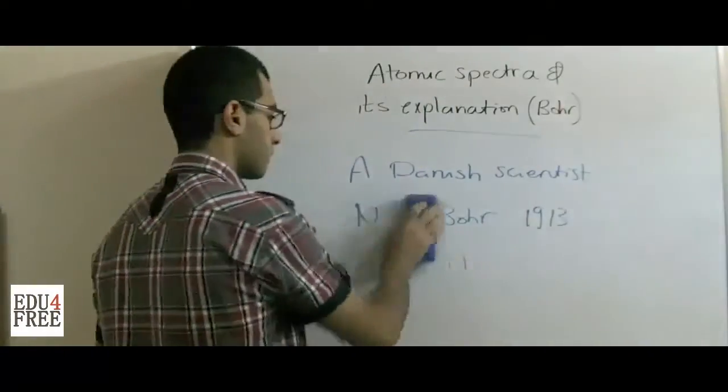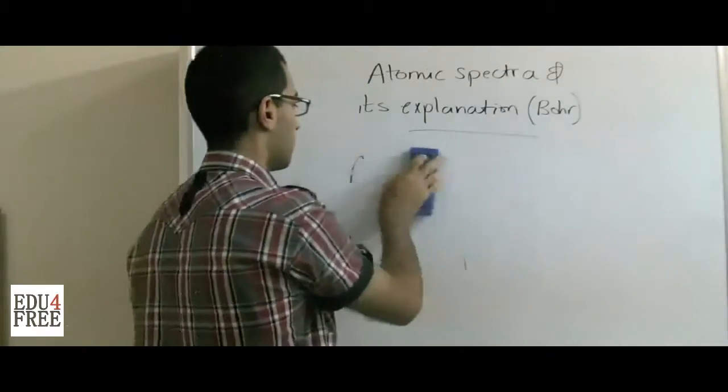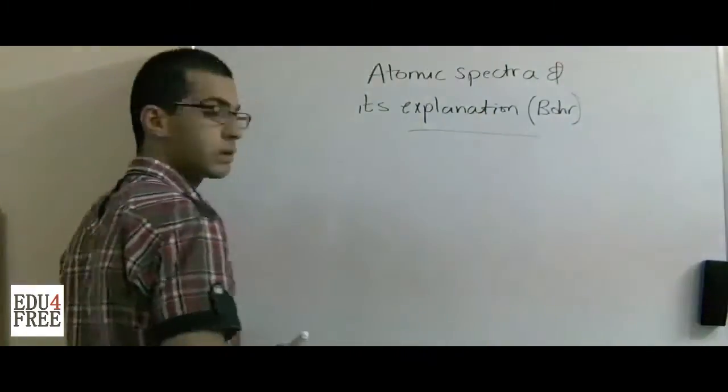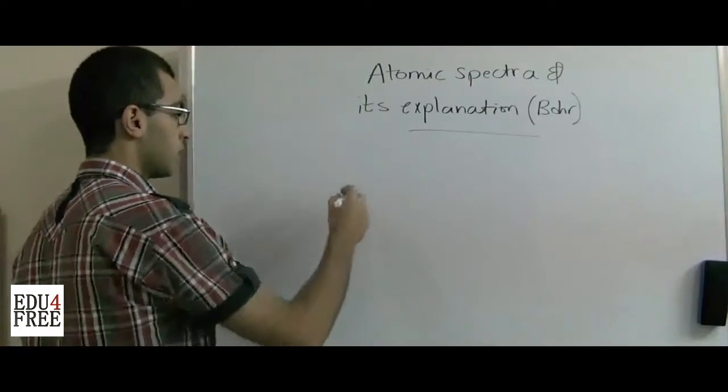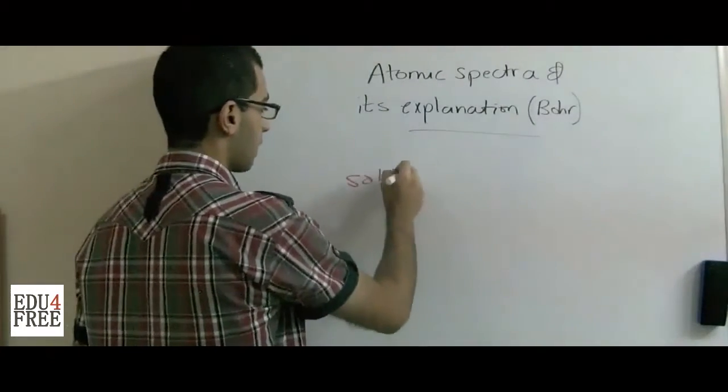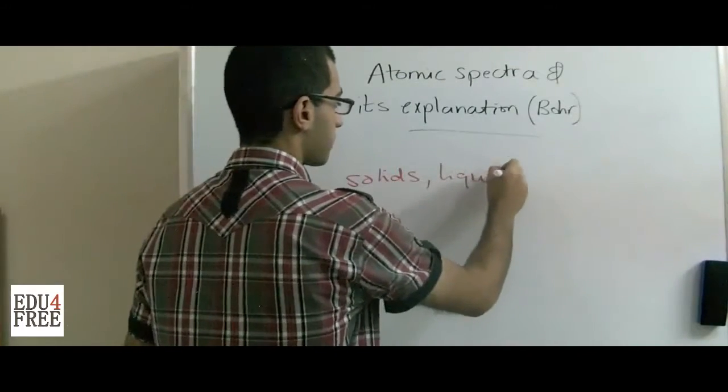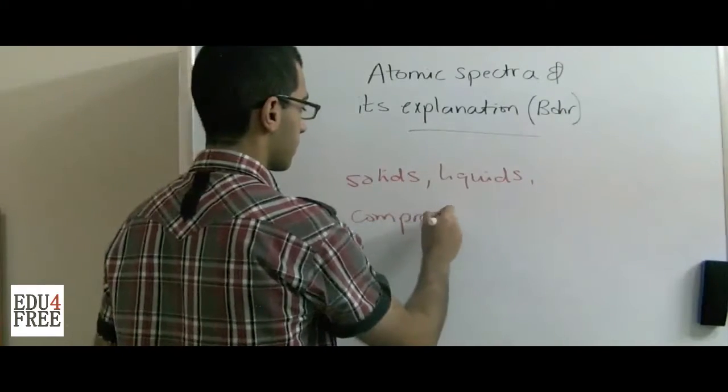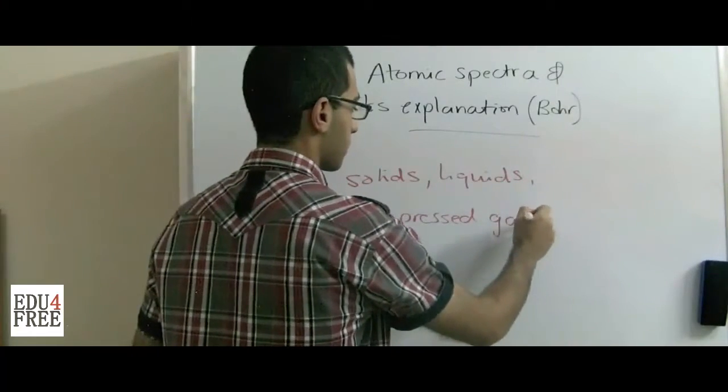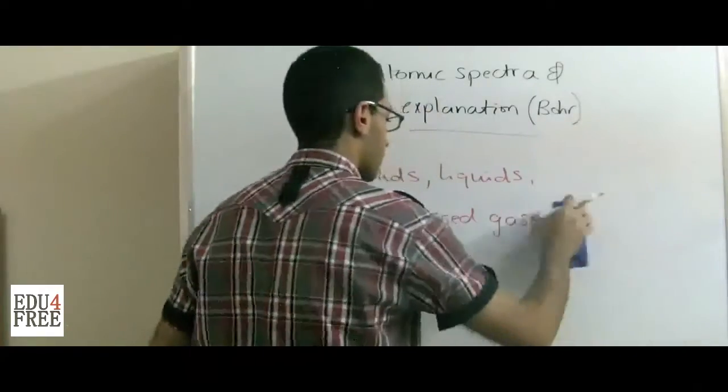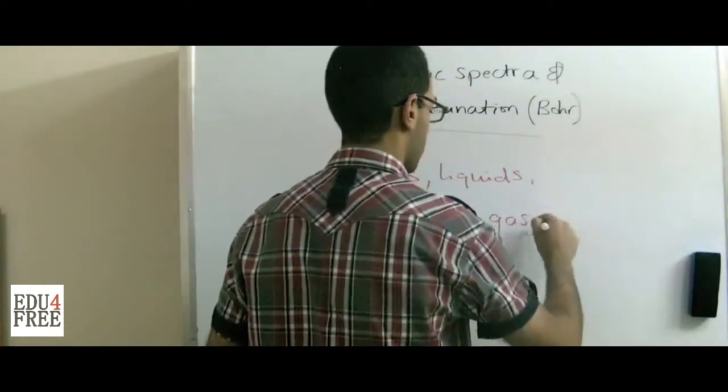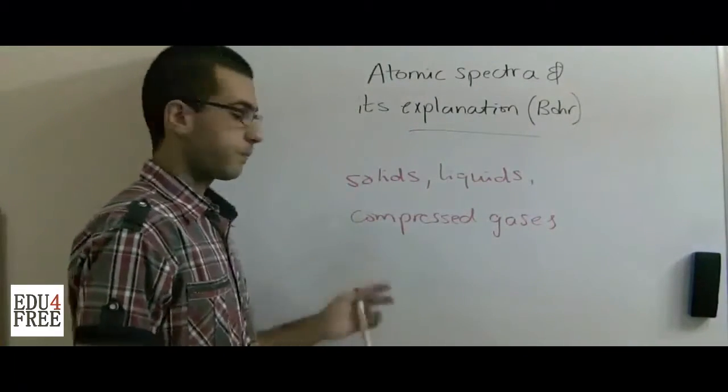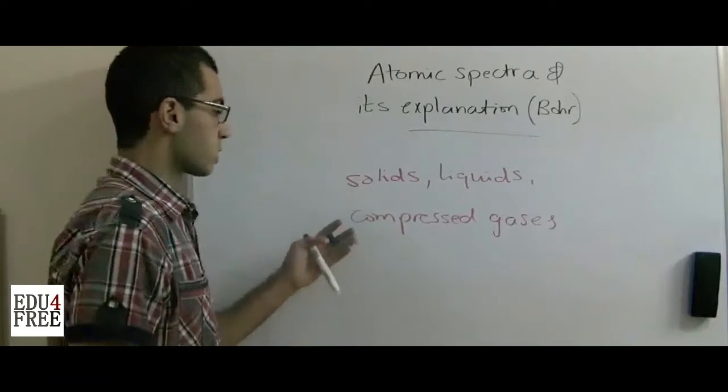First, if a mass of very closely bound atoms like solids, liquids, or compressed gases are heated, they glimmer. When they glimmer, they produce light.